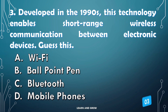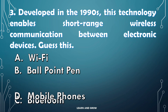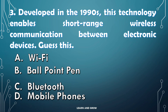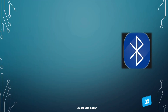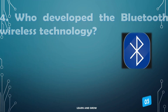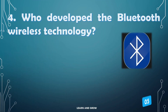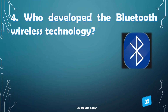Developed in the 1990s, this technology enables short-range wireless communication between electronic devices. Guess this! The right answer is option C: Bluetooth.